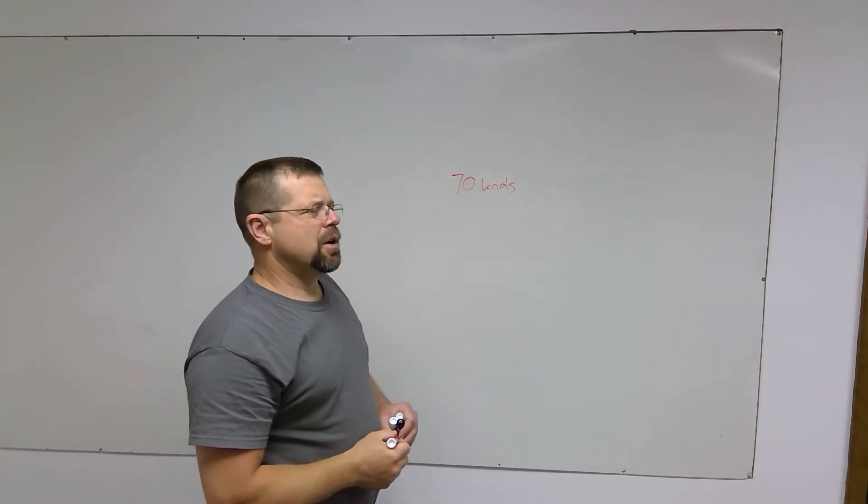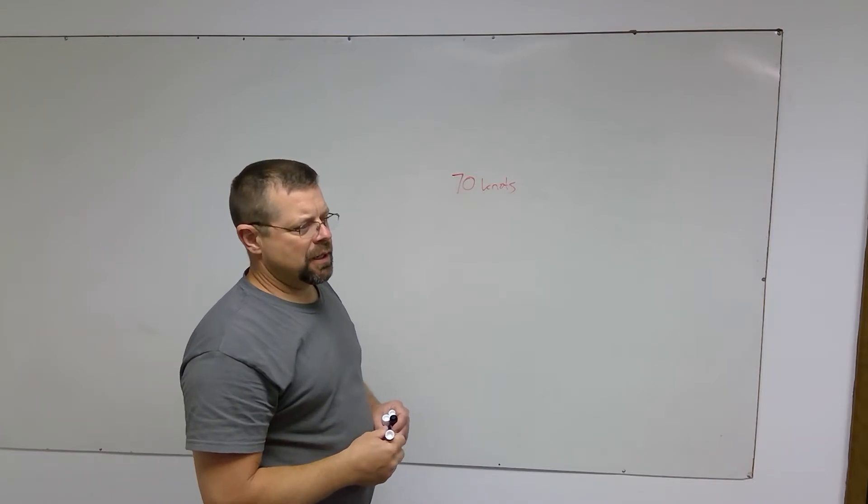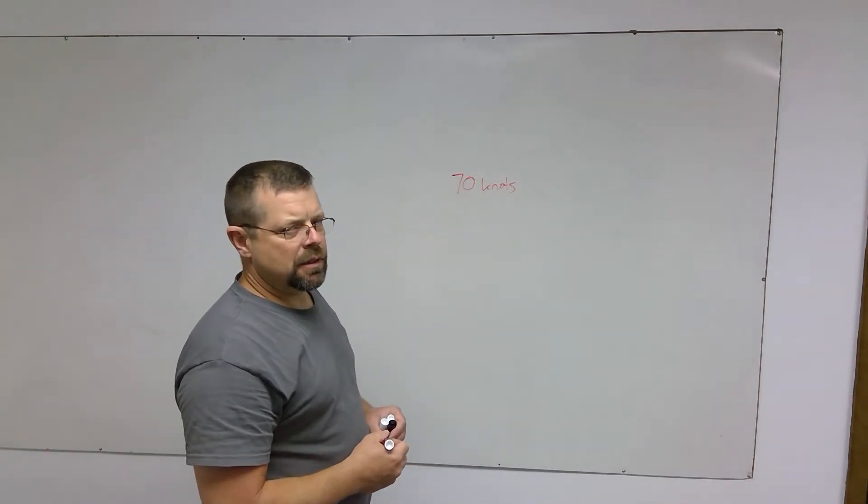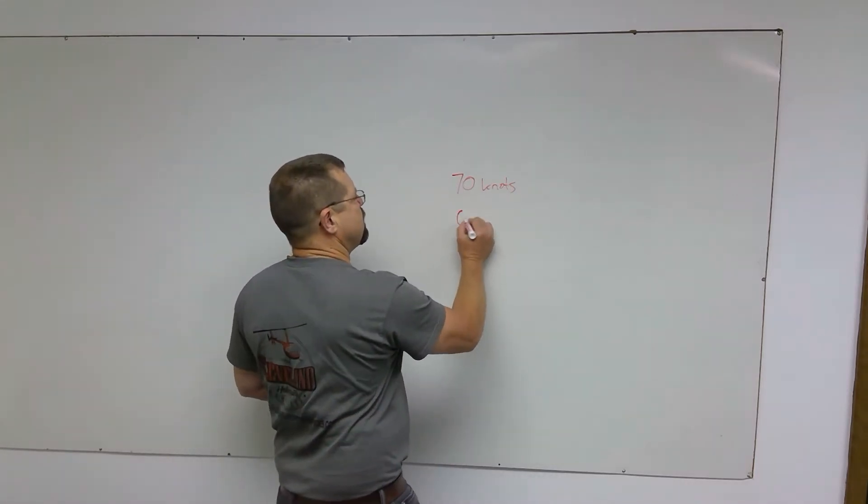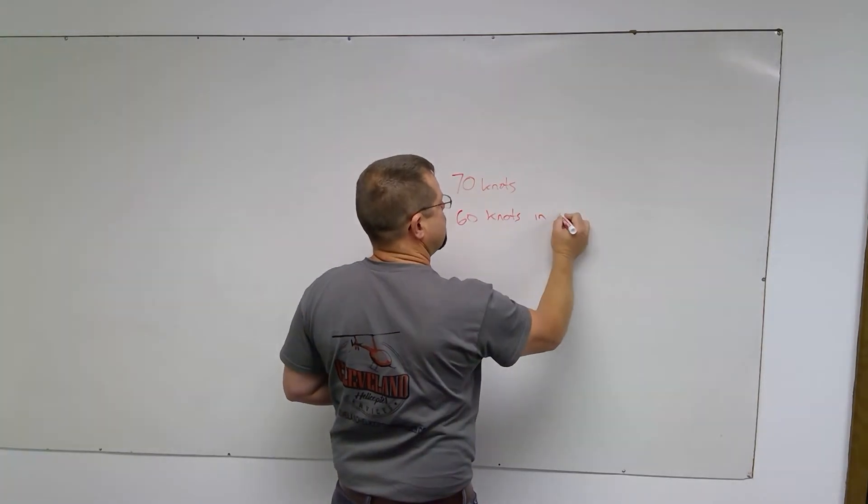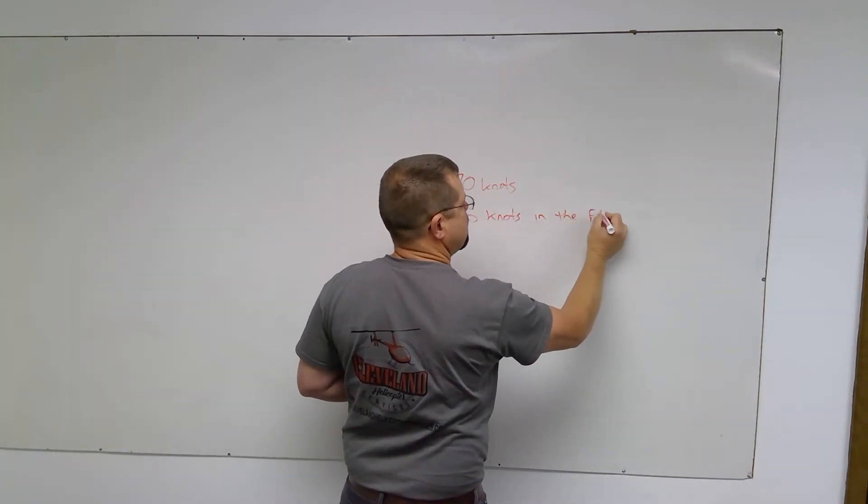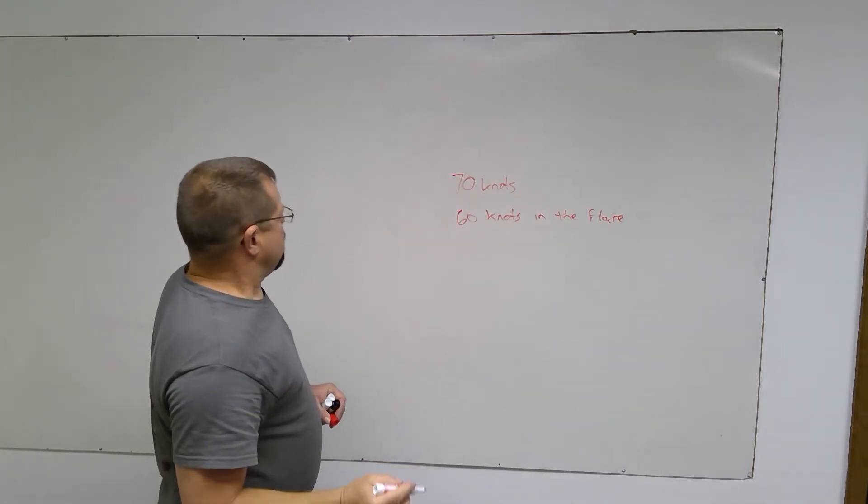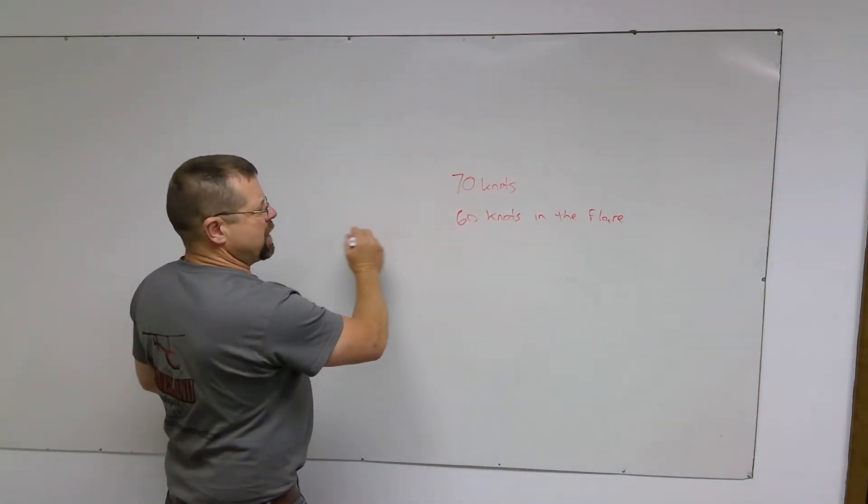It is very typical that 70 knots will be a good speed to hold in the autorotation. It is a good idea, no matter what helicopter you're in, to have 60 knots in the flare.